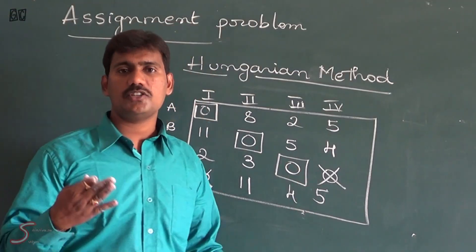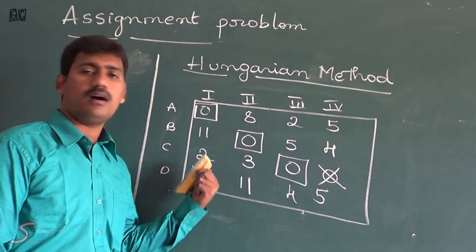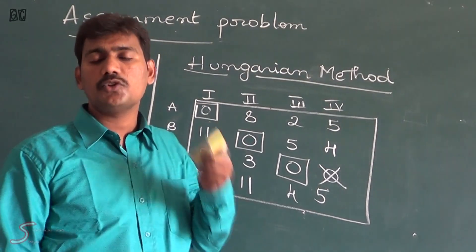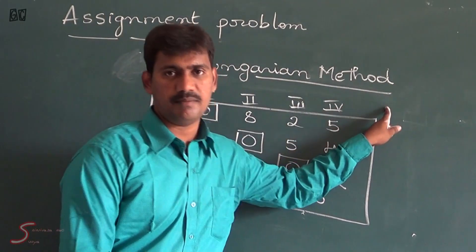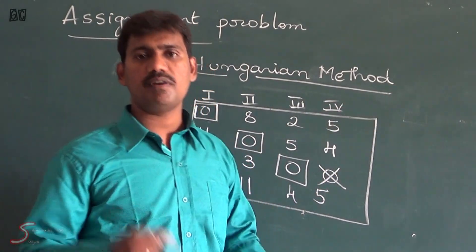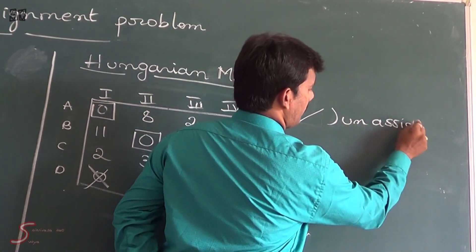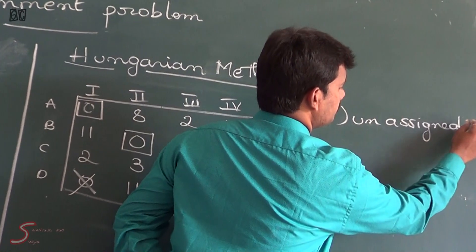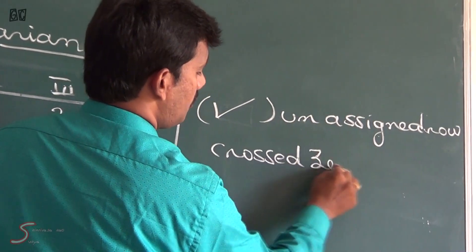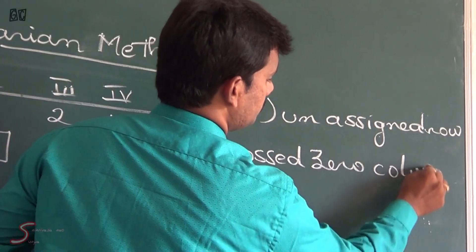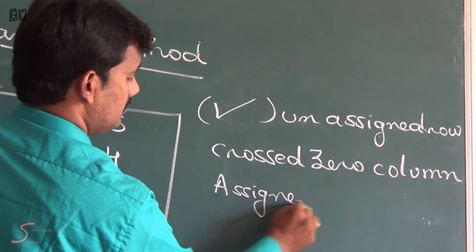In this case we assigned 3 jobs to 3 employees. If 4 assignments had occurred, the solution would be optimum, but that is not the case here. We now apply the Hungarian method of assignment. The procedure is: tick-mark the unassigned row, then mark the crossed-zero column in the unassigned row, then tick-mark the assigned row in that column.